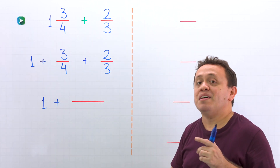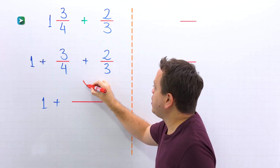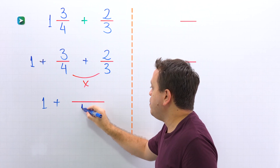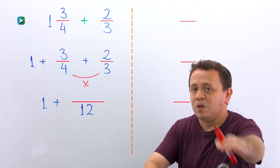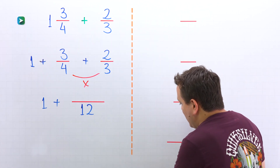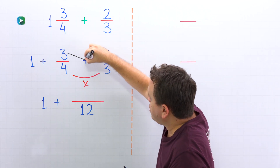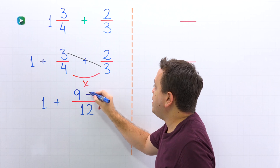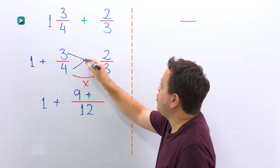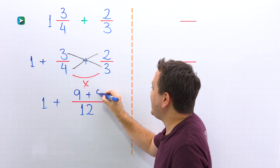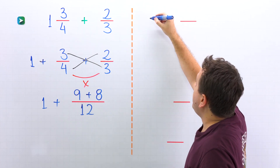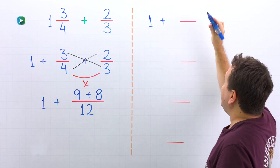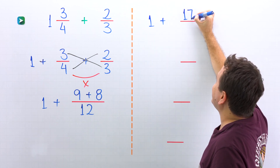Once again, we are going to use the butterfly method. In this method, we start by multiplying the denominators: 4 times 3 gives us 12. Then we are going to cross multiply. On this side, we have 3 times 3, and that gives us 9. Now we put the plus sign. On the other side, we have 4 times 2, and that gives us 8. So we have 1 plus 9 plus 8, which gives us 17. That is correct.